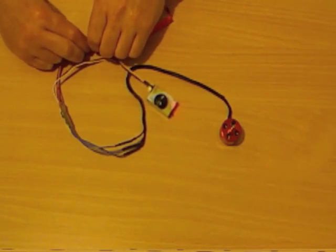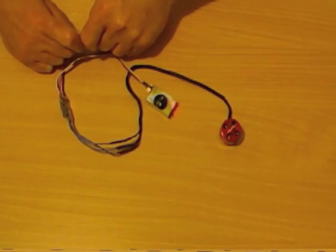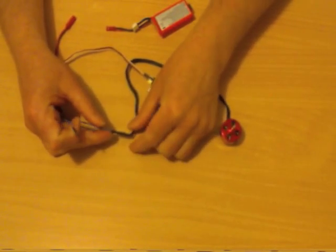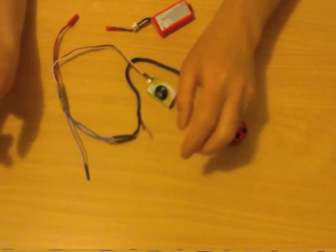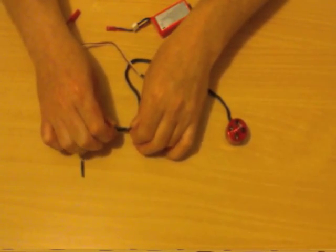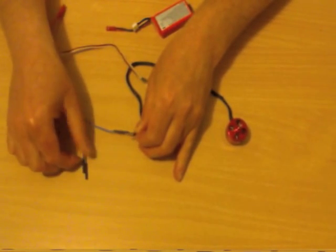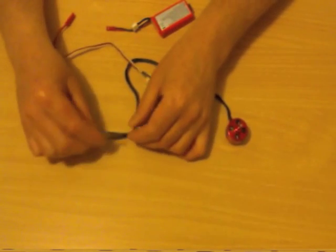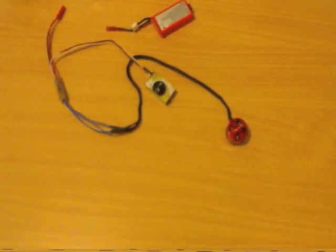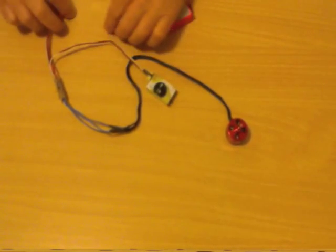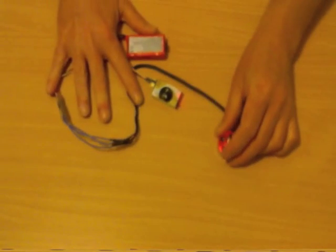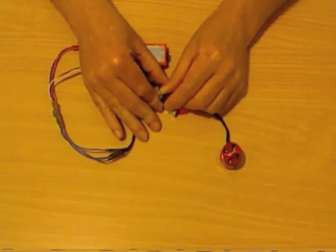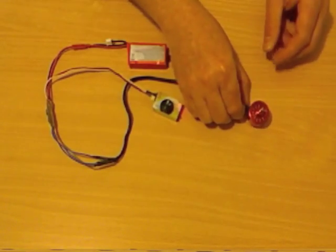But if I wanted it to go counterclockwise, what I need to do is, firstly, I'm going to power down the speedy for safety. And I'm going to unplug two of the motor wires and swap that pair of motor wires around. Any pair, doesn't matter which pair. Then I power back up and start the motor running. And now it is going counterclockwise.